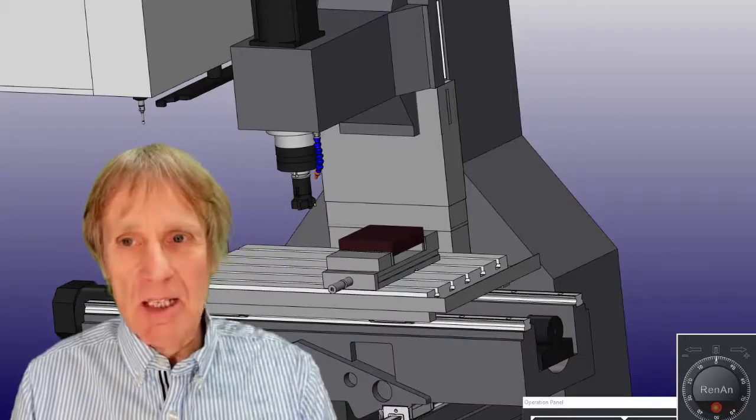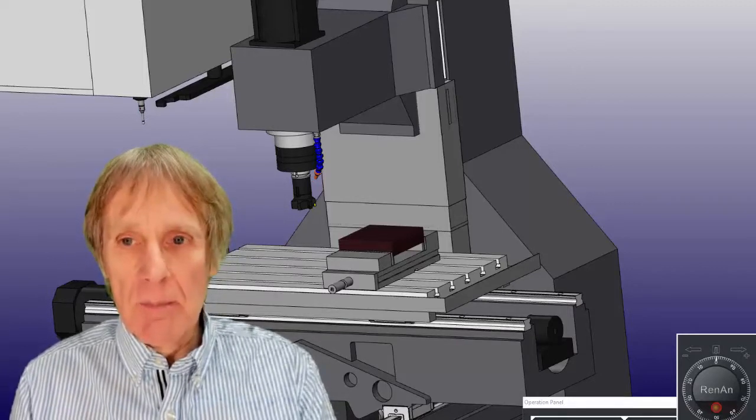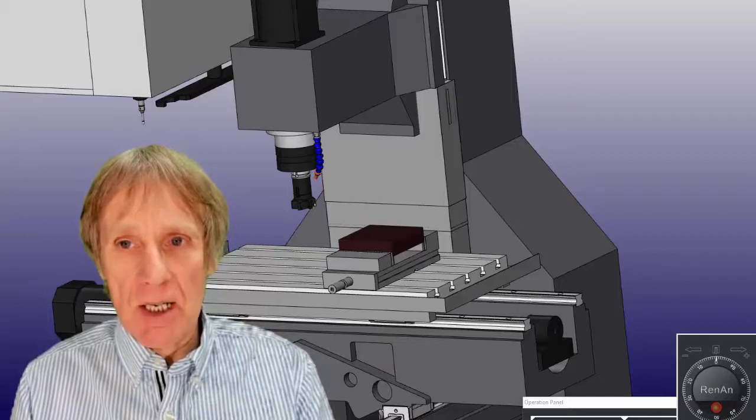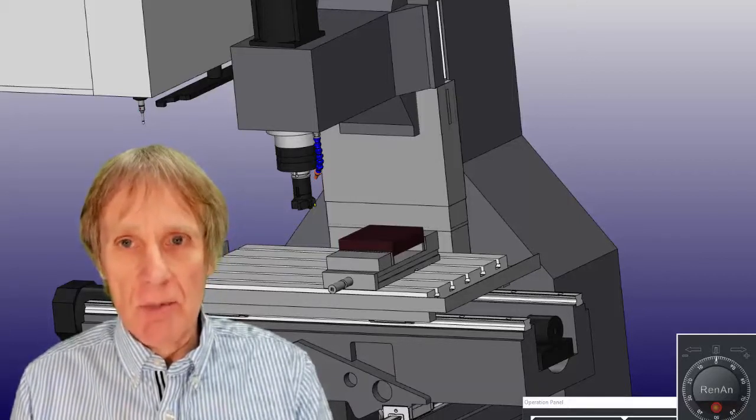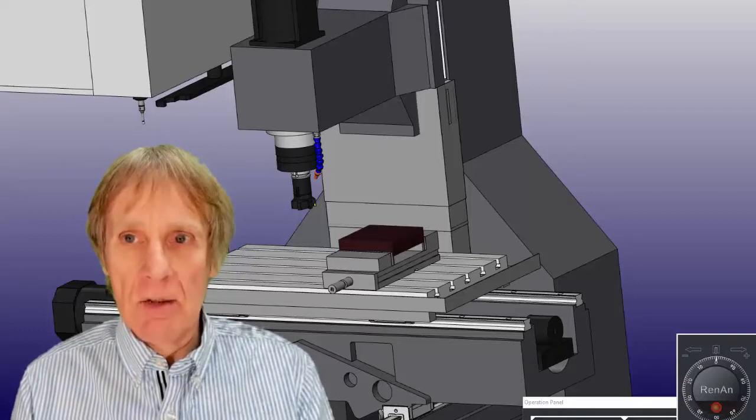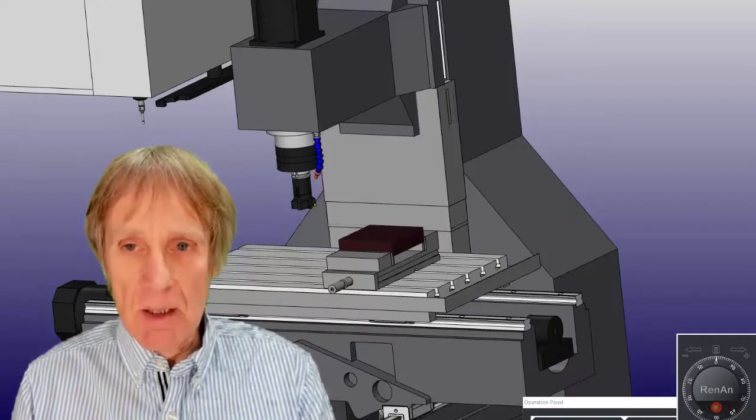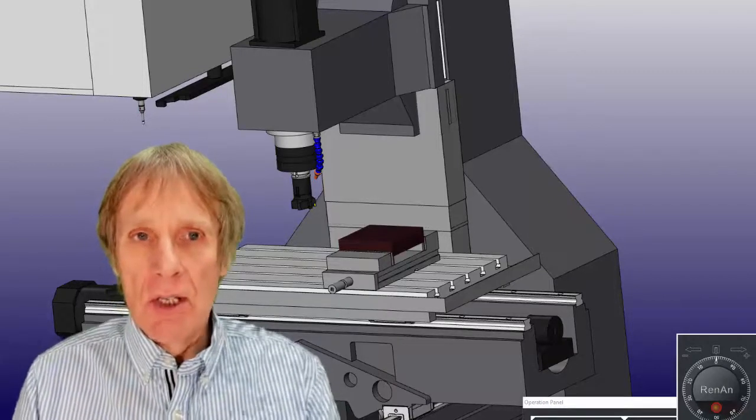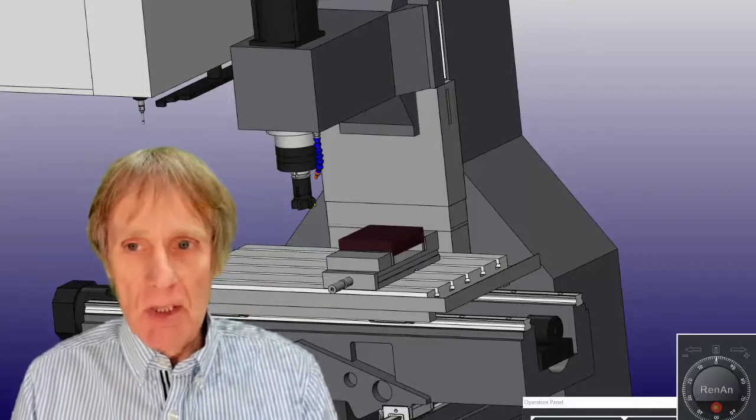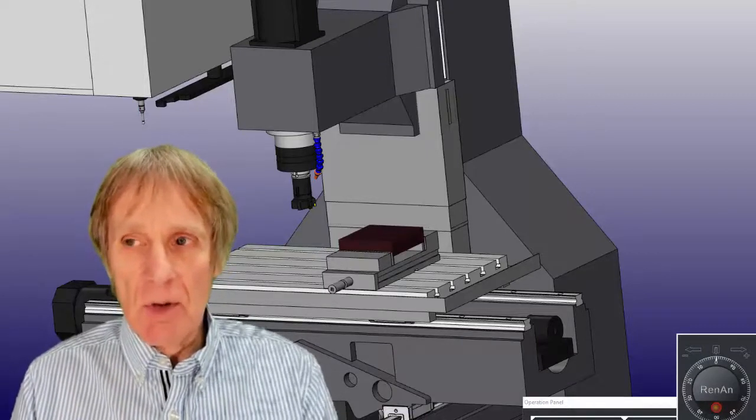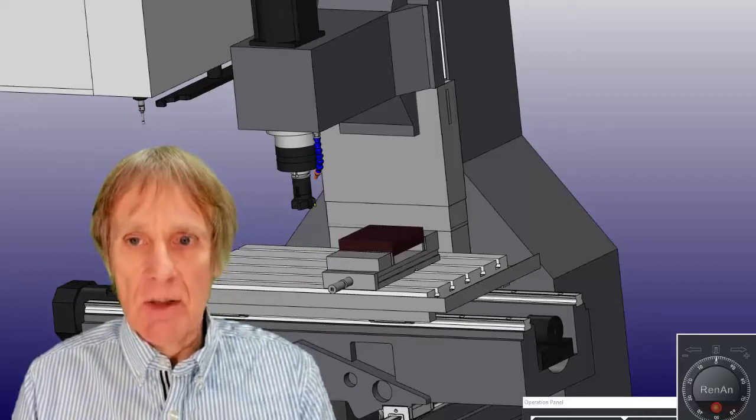These are all things to consider when we switch off the machine. Obviously we position the machine in a certain way when we switch it off so that the next day when we switch on the machine we can reference it. On most controls you are meant to hit the emergency stop button first and then shut the machine down, but this is going to depend on individual machines.